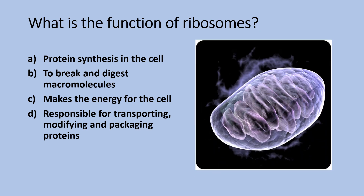The answer is protein synthesis in the cell. Ribosomes are found floating within the cytoplasm or may be attached to the endoplasmic reticulum. Their main function is to convert genetic code into amino acid sequences and build a protein polymer from amino acid monomers — they synthesize protein in the cell.